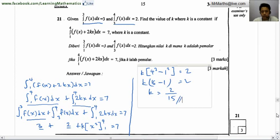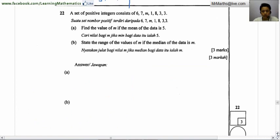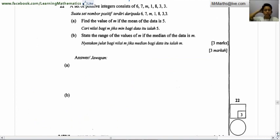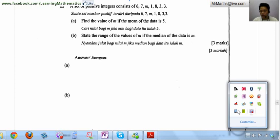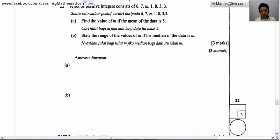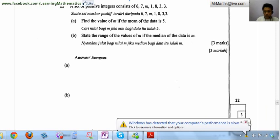It's very simple. Let's go to the next question, and this is a statistics question. A set of positive integers consisting of 6, 7, m, 1, 8, 3, and 3. You know the mean, meaning that you need to total up all the numbers there and divide it by the number of terms. In this case this number has 7 values to it.